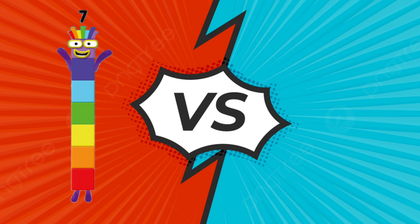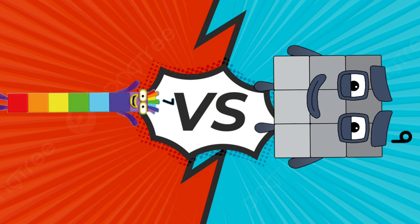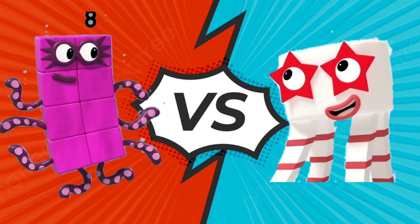Number block 7 likes hot, and number block 9 likes cold. Number block 8 likes hot. Number block 10 likes cold.